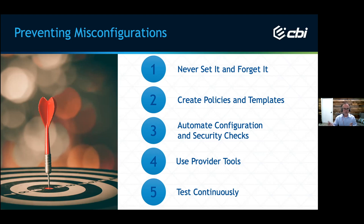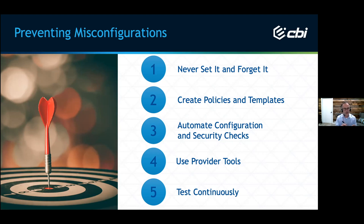Number four: use the tools available at your disposal. Understand your shared responsibility model and what capabilities you have. Many people I talk to aren't familiar with O365's automated incident response — AIR. It's just another tool many people aren't aware of. Rate limiting and throttling are great mechanisms for preventing malicious attacks. Use those provider tools.